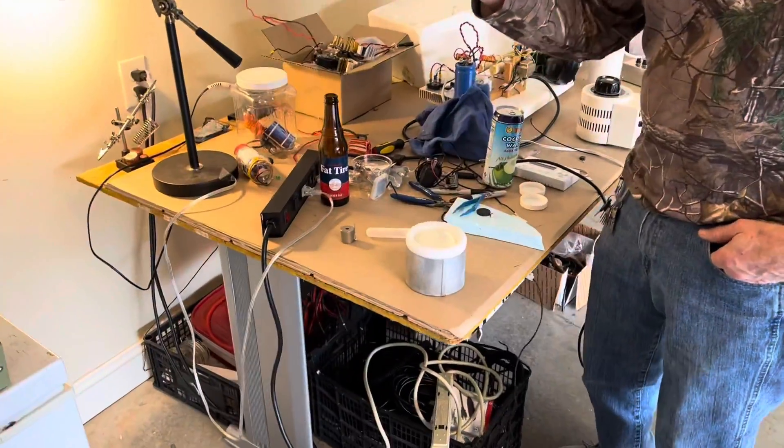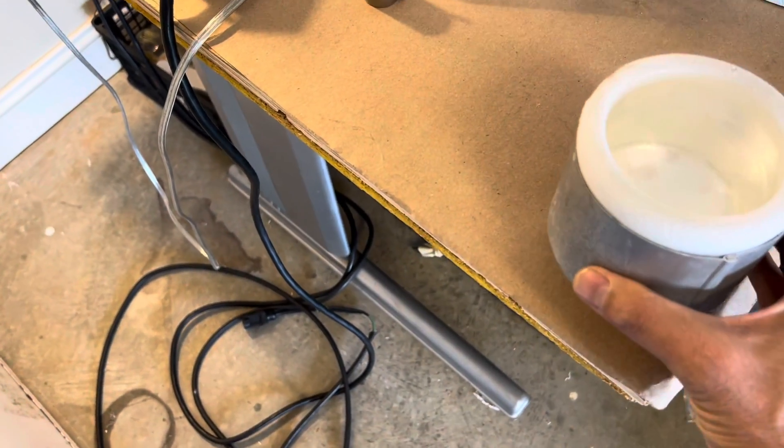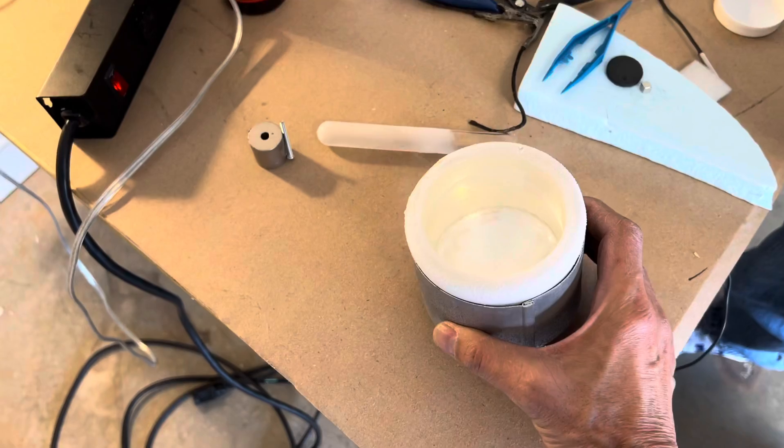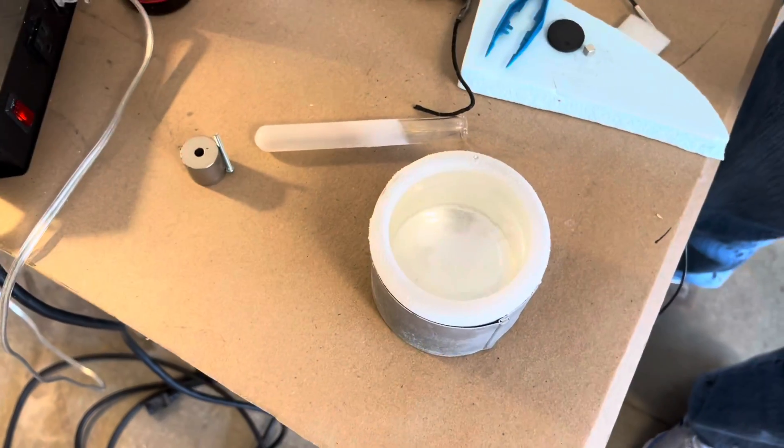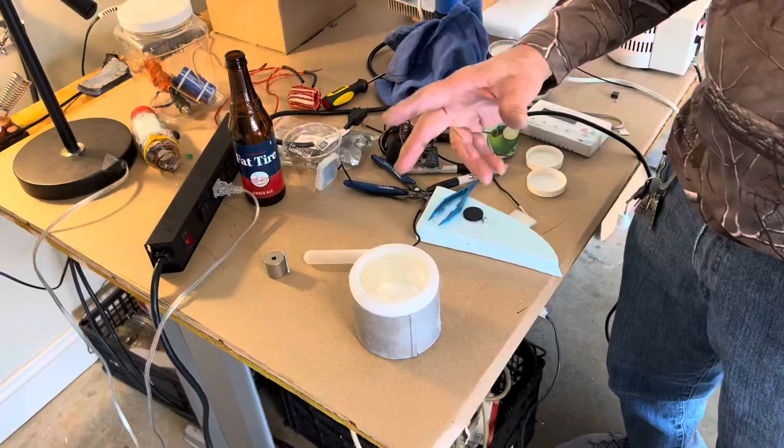In this video we're going to demonstrate the Leidenfrost effect. Here we have a dewar vessel of liquid nitrogen at almost minus 200 degrees Centigrade. I'm going to prove to you that you can put your hand in it.